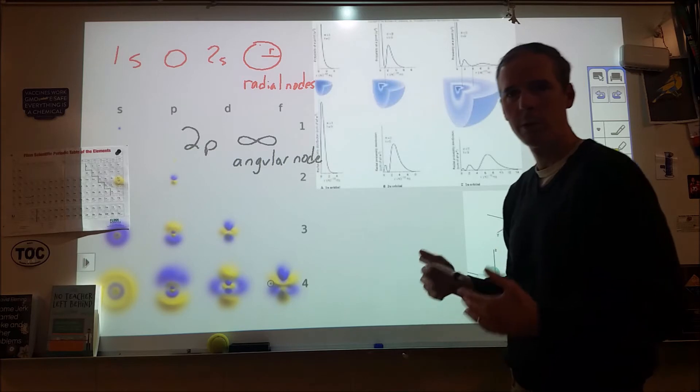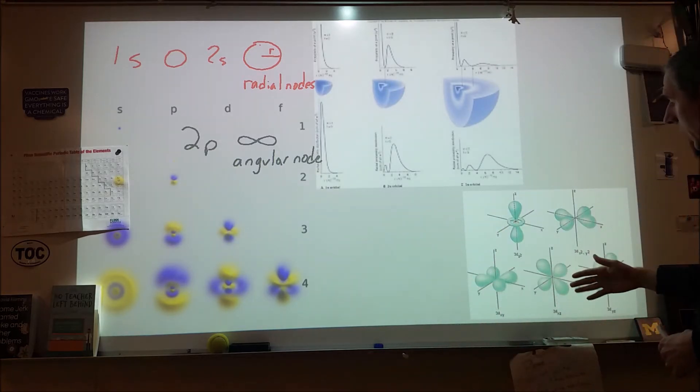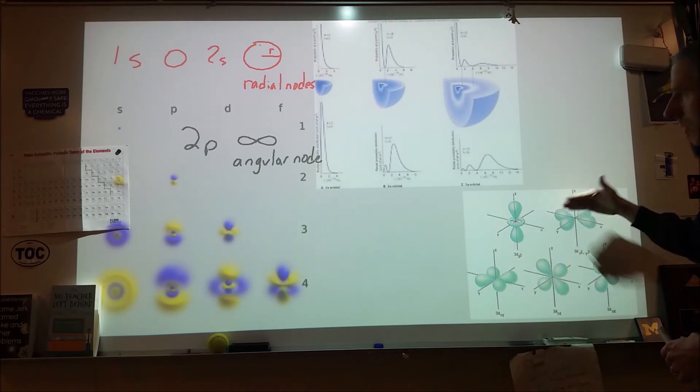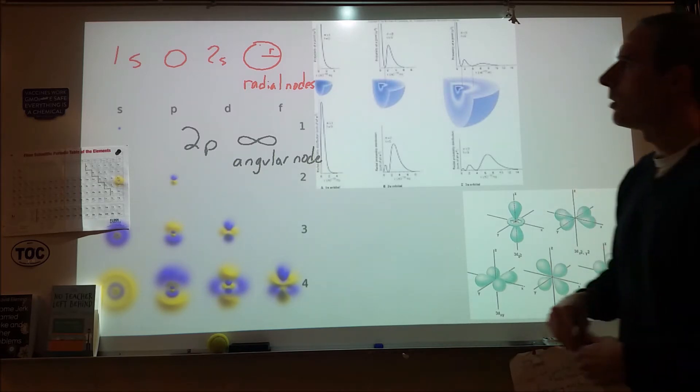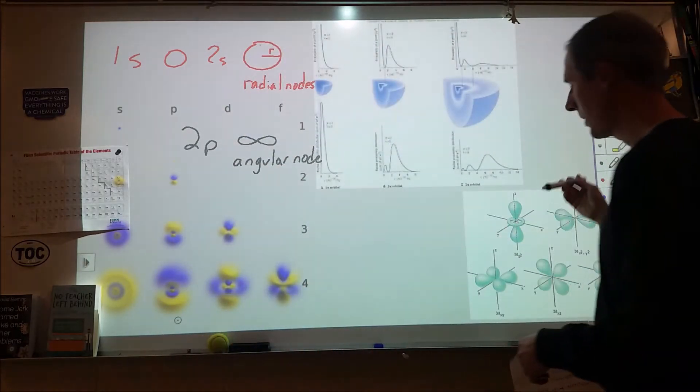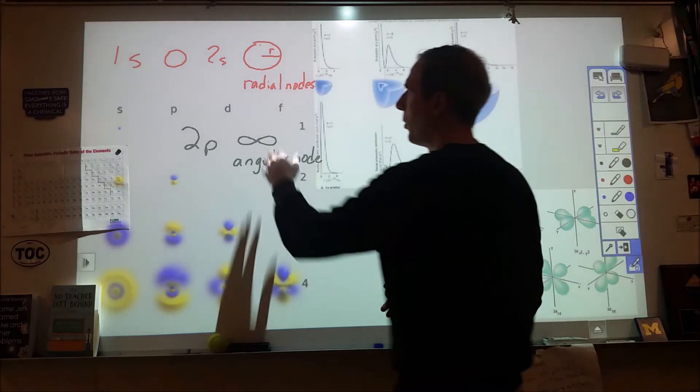As we go up in energy levels, the number of nodes increases. And as we go up in s to p to d to f, the number of angular nodes increase. So you may have seen d orbitals or f orbitals and been like, those are funny shapes. What's up with those? Here are some d orbitals here. And what you'll notice is if we look at these, that each of these has two angular nodes.